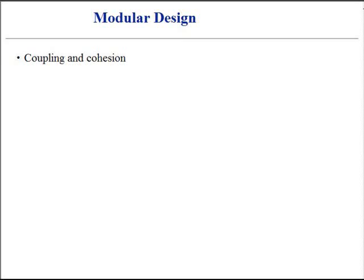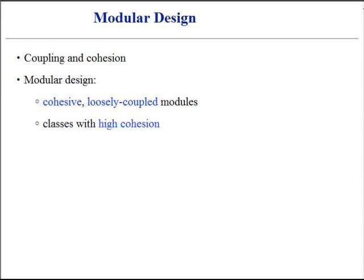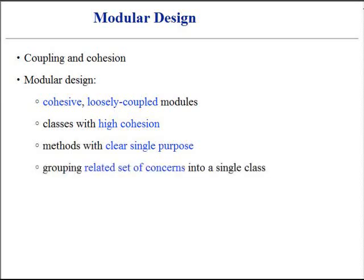Coupling and Cohesion are old principles in software design. Designing with objects does not imply ignoring well-established fundamentals. Another principle, which is strongly related to coupling and cohesion, is to promote modular design. Modularity is the property of a system that has been decomposed into a set of cohesive and loosely coupled modules. We promote modular design by establishing methods assigned to classes with high cohesion. At the basic object level, modularity is achieved by designing each method with a clear single purpose in mind. Grouping a related set of concerns into a single class also aids highly cohesive design.